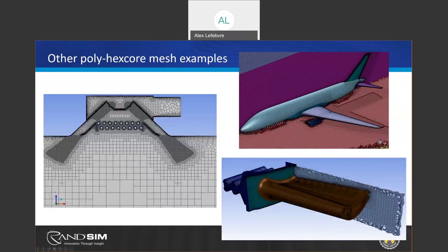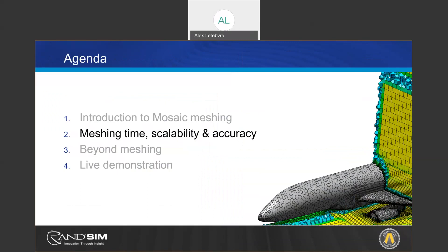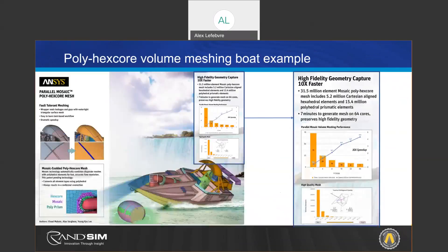Other examples using poly prism and hex core show that this technology can be leveraged in aerospace industries, aircraft, turbines, or heat exchanger simulations, etc. There is really no limitation on what can be done with this mesher. Let's now look at meshing time, scalability, and accuracy, now that we understand a little better what mosaic meshing means.